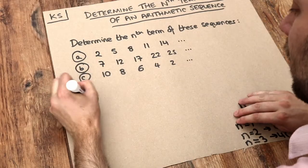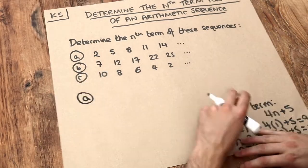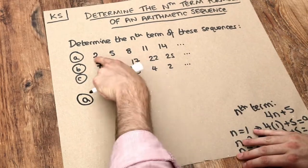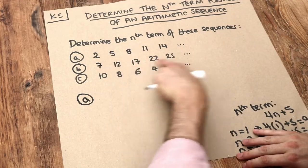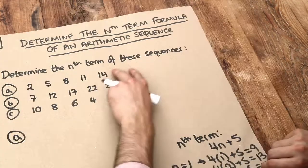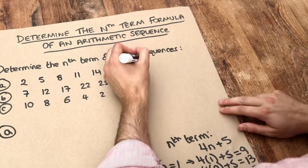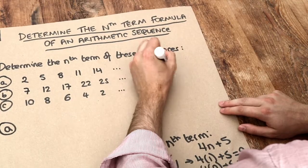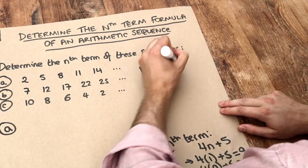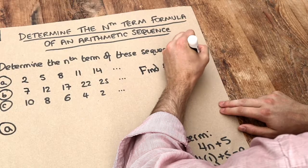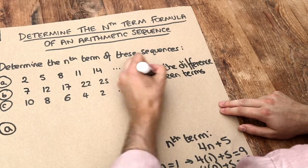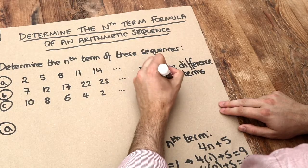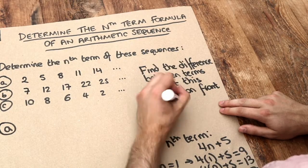So let's apply that principle to these sequences here. Find the difference between terms and put this number in front of n.